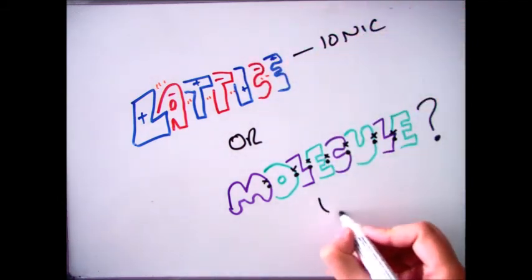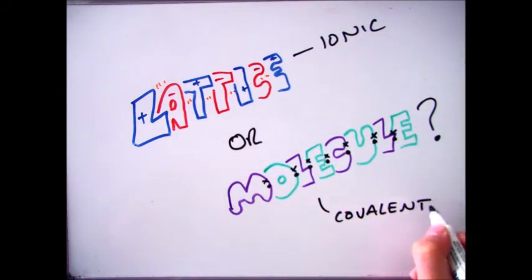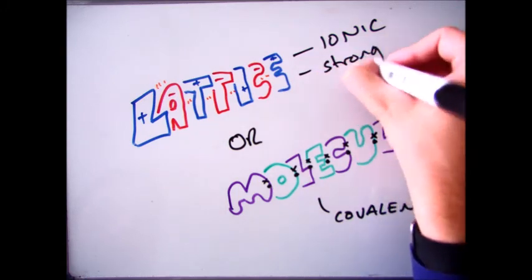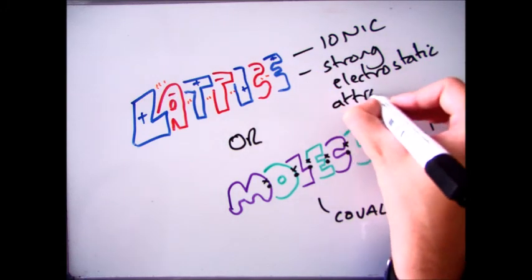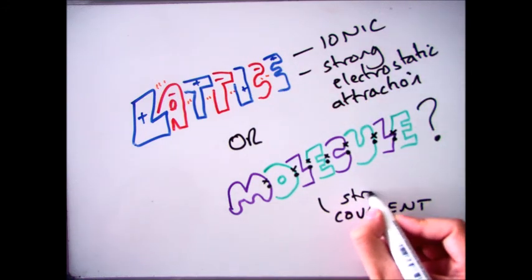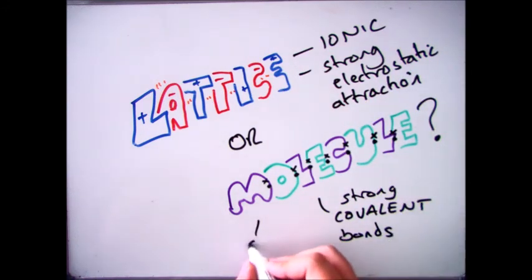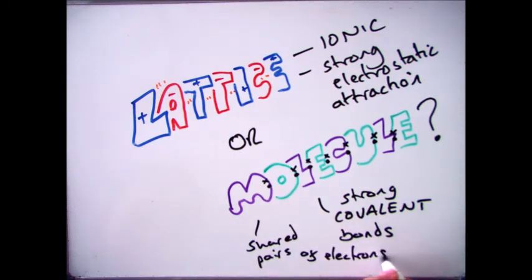You should be able to remember that our lattices are ionic and therefore molecules are going to be covalent. So we have that strong electrostatic force between the molecules which forms the lattice structure, and then we have strong covalent bonds which form our molecules and it's made up of shared pairs of electrons.